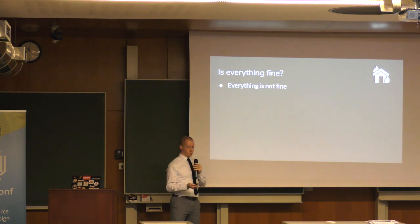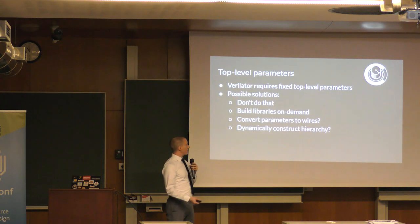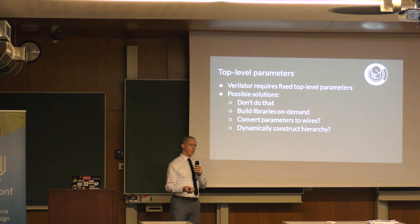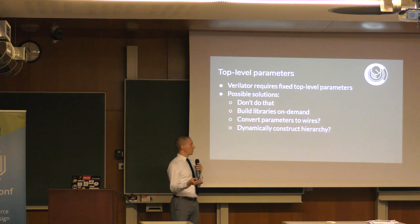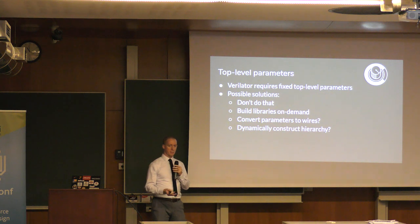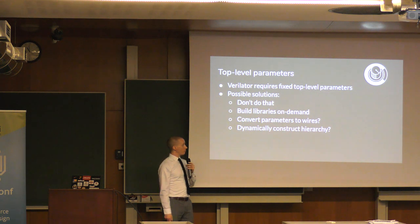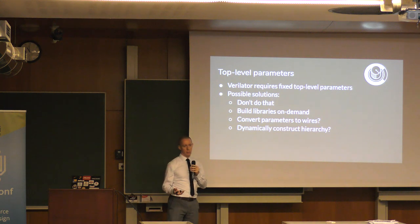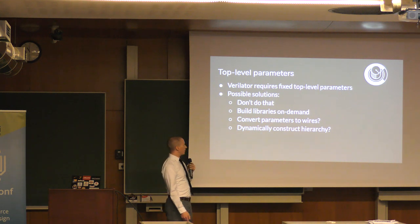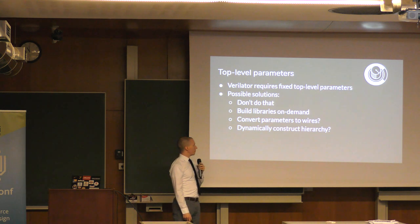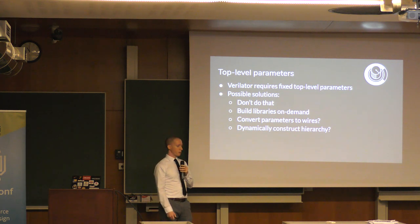Let's talk about problems. The biggest one is probably top-level parameters. Since we're now compiling this code at the IP vendor site as opposed to the end-user site, the top-level parameters have to be fixed because that's how Verilator works. One option is to just not have parameters for your IP cores — that's probably overly restrictive but maybe fits some use cases. You could build the libraries on demand if your parameter space is relatively small.